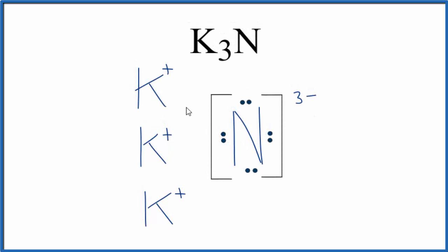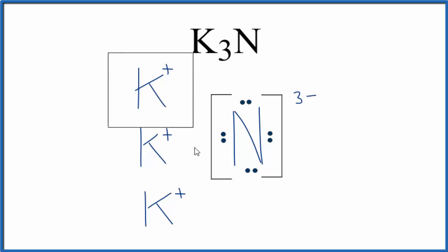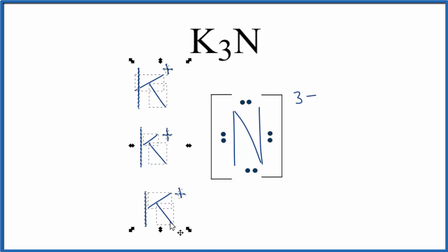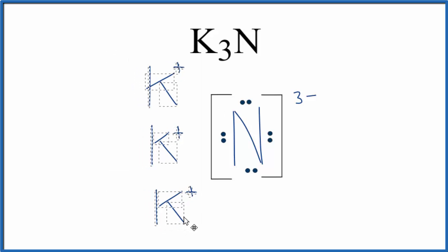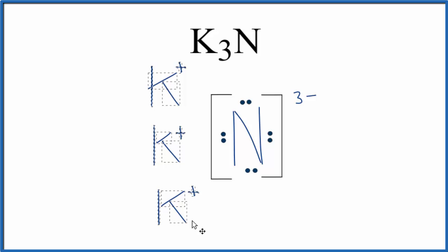You'll often see brackets around the positive ion as well. But the point is to show that we have these electrons now — they're not shared between the metal and the non-metal, because this is an ionic bond. Since we have this negative charge and these positive charges, the positives and negatives are attracted, and that's what forms the ionic bond.